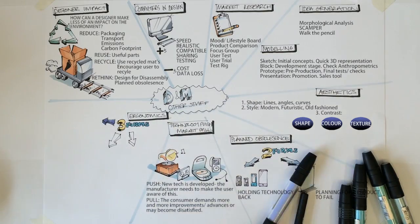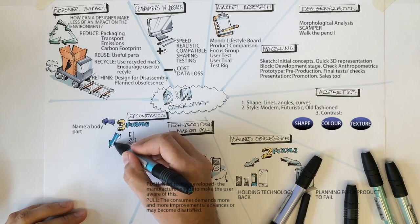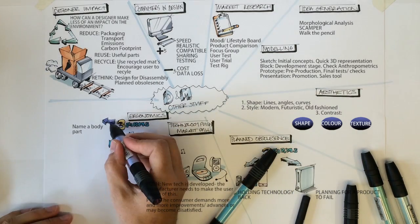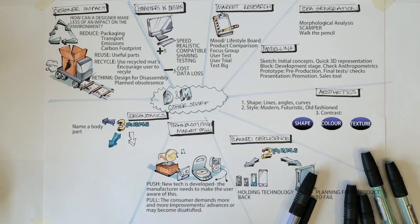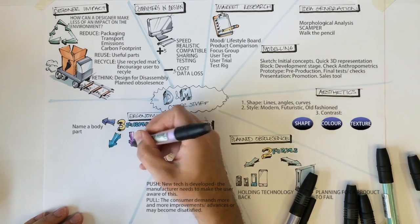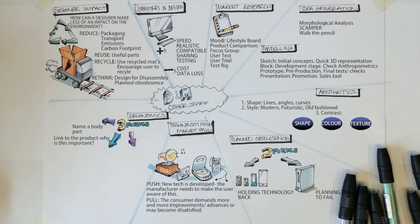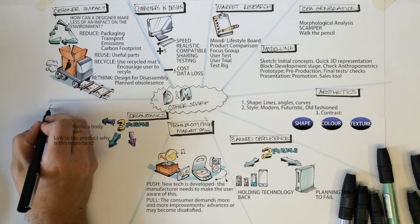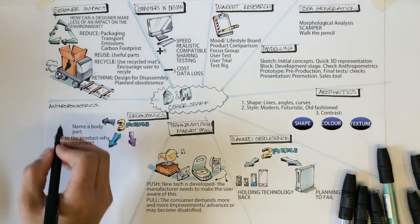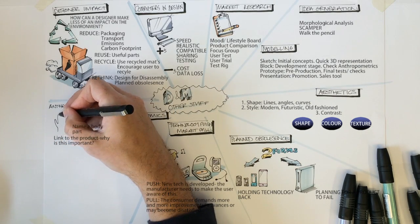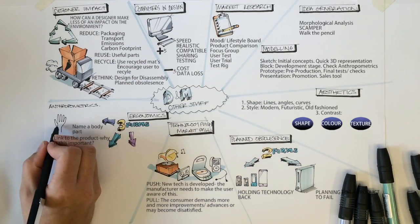When answering questions regarding anthropometrics, you must first name a body part, e.g. hand width, grip size, finger length, arm length, etc. Crucially, you must then relate this to the product and state why this size is important. For example, the grip size would have to be considered in order for the child to hold onto the handlebars firmly and steer the bike safely.